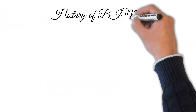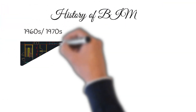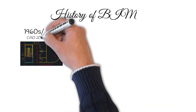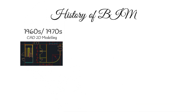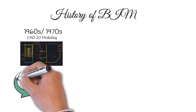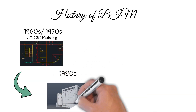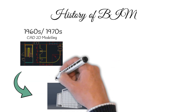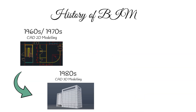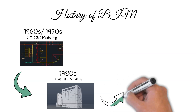The origins of BIM can be traced back to the development of CAD systems in the 1960s and 1970s. These early systems allowed architects and engineers to create two-dimensional digital representations of buildings. In the 1980s, CAD technology advanced to include three-dimensional modelling capabilities, enabling architects and engineers to create more detailed and realistic representations of buildings.